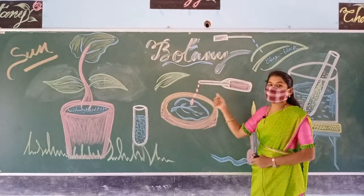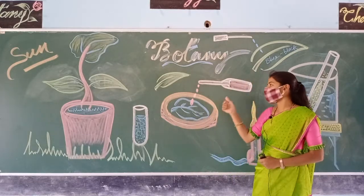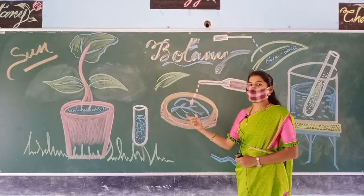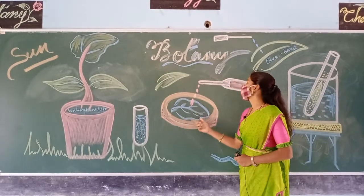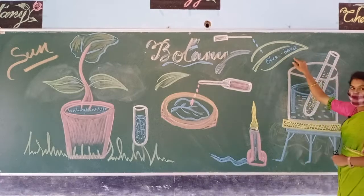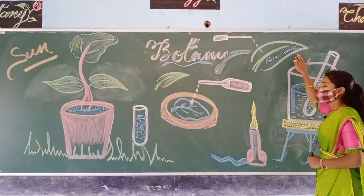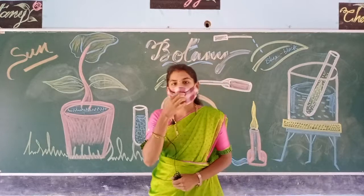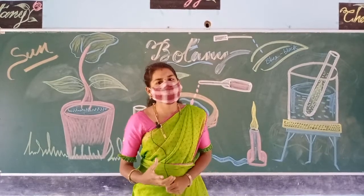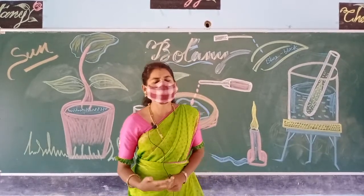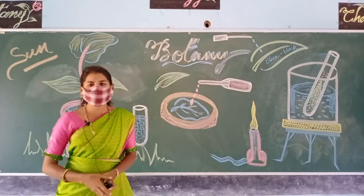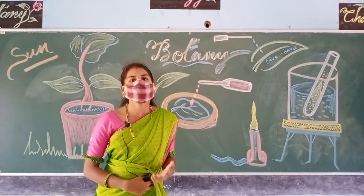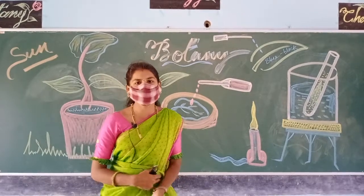Now add iodine solution to the leaf in the petri dish. The leaf, which was pale white, slowly turns blue-black in color. This shows the presence of starch in the leaf and also tells us that starch is a carbohydrate. In this way we can prove that plants prepare food in the form of starch, which is an example of a carbohydrate.